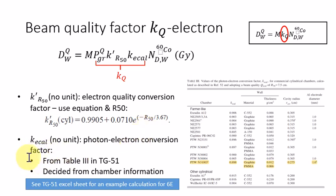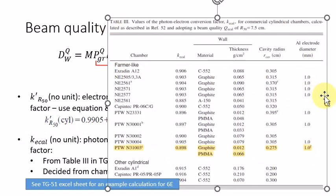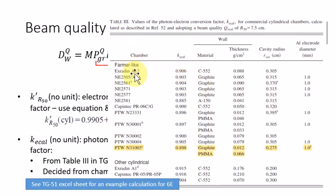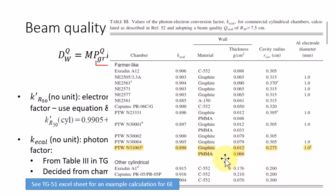The last factor, which also has no unit, is the KECAL — the photon-electron conversion factor. We can find this factor from Table 3 in the TG51 report, and it is determined from the chamber information. It lists the types of chambers normally used for TG51 measurements and the KECAL value for each. If your chamber is not listed, find the closest match by thickness, cavity radius, and material, and obtain your KECAL from that entry.